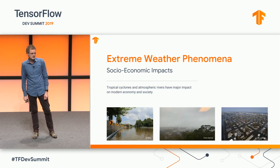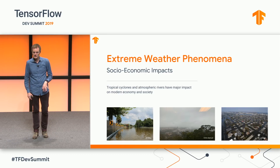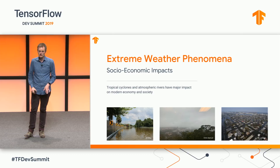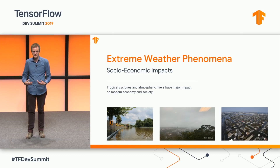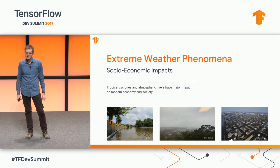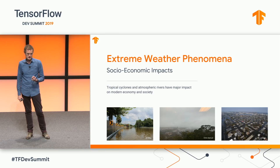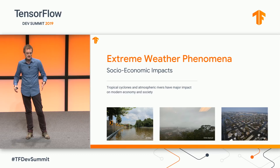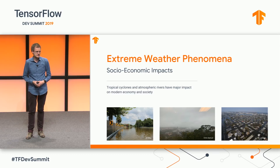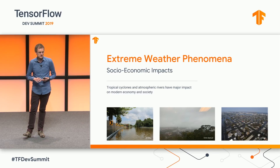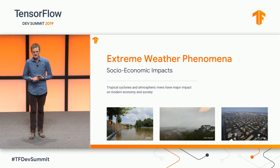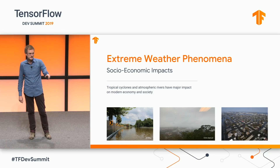I want to talk about extreme weather phenomena. They're important because they can incur a lot of damage and loss of life. For example, in 2017 the damage to the US economy was about 200 billion dollars from combined extreme weather events — these can be hurricanes, tropical cyclones, and atmospheric rivers, because they can cause heavy flooding and major disruption.